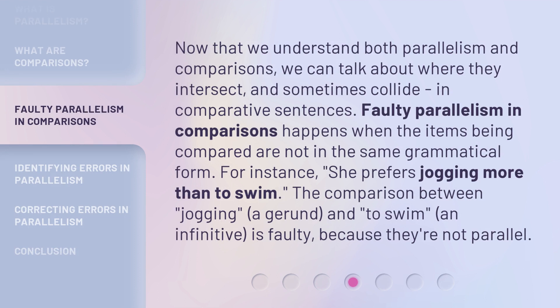Now that we understand both parallelism and comparisons, we can talk about where they intersect, and sometimes collide, in comparative sentences. Faulty parallelism in comparisons happens when the items being compared are not in the same grammatical form. For instance, 'she prefers jogging more than to swim.' The comparison between 'jogging,' a gerund, and 'to swim,' an infinitive, is faulty because they're not parallel.